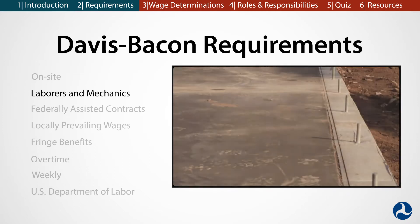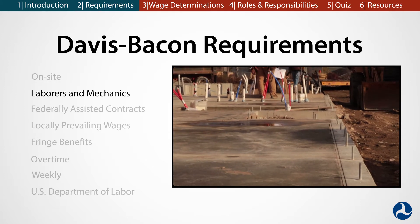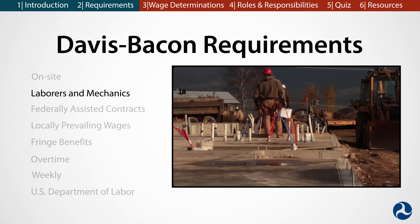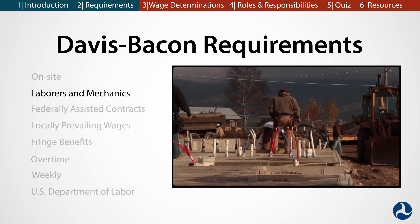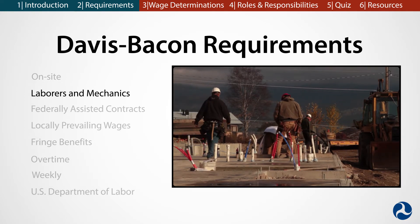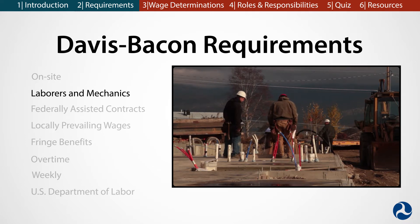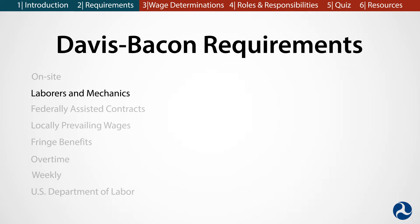Laborers and mechanics. The DBA applies to laborers and mechanics who are construction contractors and subcontractors. Apprentices, trainees, and helpers are not explicitly covered under the Davis-Bacon Act, and they are not required to be paid the prevailing wage rate. They are permitted to work on DBA-covered projects, however. The DBA also does not apply to design engineers or other professionals involved in the project, even if they visit the site of work.